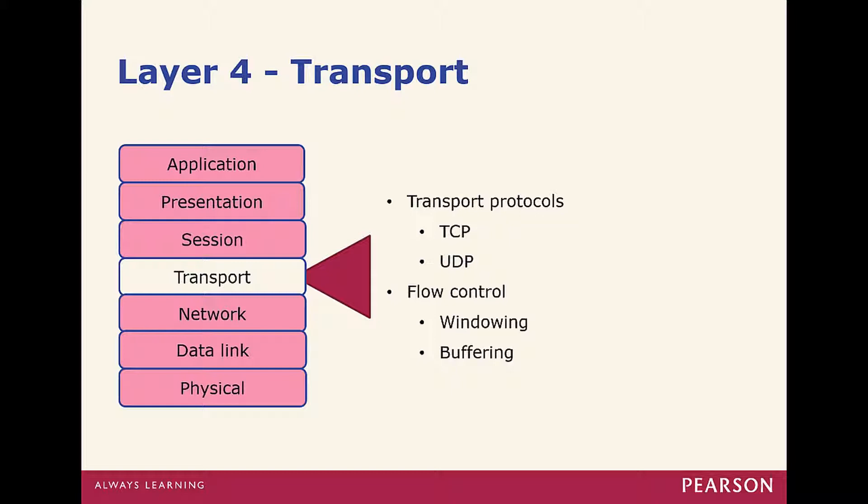Layer 4 is Transport. It deals with transmission protocols — connection versus connectionless oriented, TCP versus UDP — and flow control like windowing versus buffering. Connection-oriented means guaranteed delivery — that's TCP. If a packet is sent and dropped due to an error, the sender resends it until the receiver gets it. Connectionless is UDP — best effort. If you get it, great; if you don't, oh well.